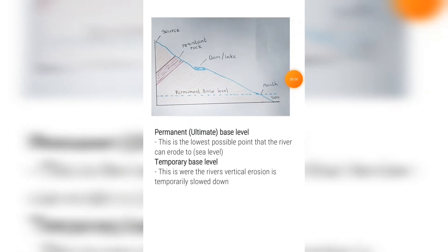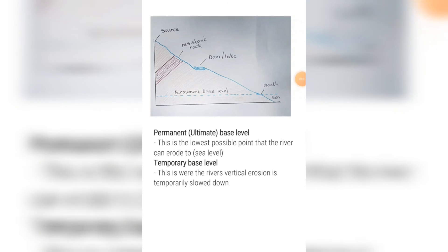Temporary base level is when the river's vertical erosion is temporarily slowed down. This is not the permanent base level but at this point very little to no erosion takes place. Examples of this are rapids, waterfalls, lakes or dams.